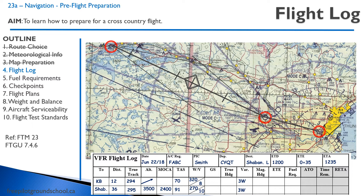Then to Shibandawan, we again measure our distance, our track, figure out our altitude, and get our wind velocity. Wind velocity is from the FD, the upper wind report.